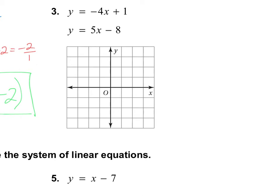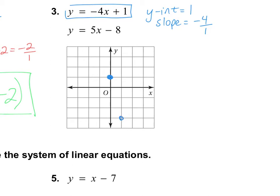Let's look at number 3. The first equation is y equals negative 4x plus 1. The y-intercept is at positive 1. The slope is negative 4, which is negative 4 over 1, so we go down 1, 2, 3, 4 and over 1 and put a point. I could go up slightly off the graph in the other direction, and we'll check when we do the second equation.